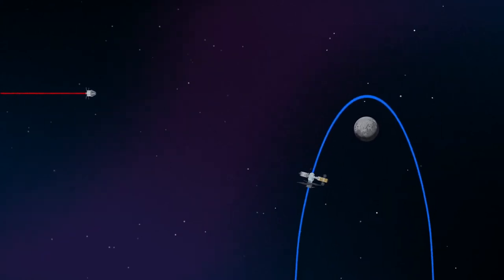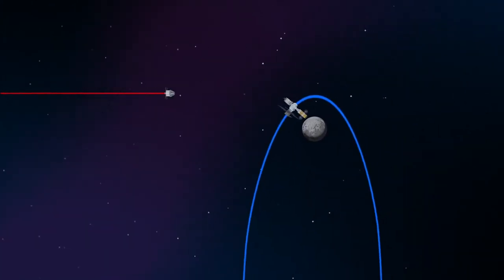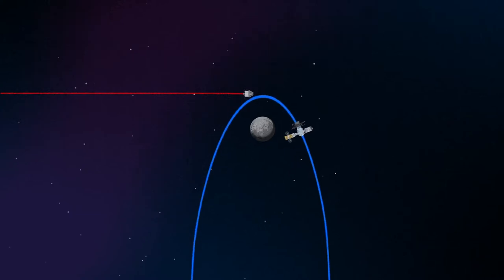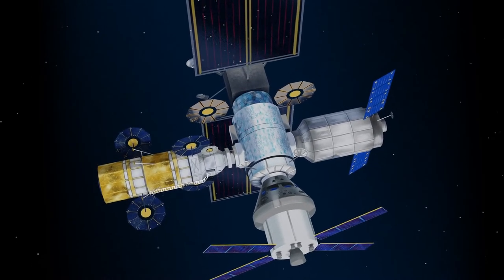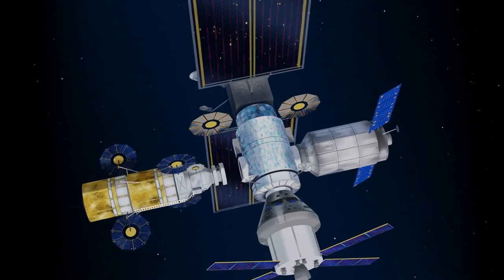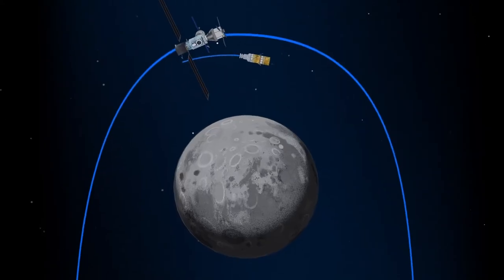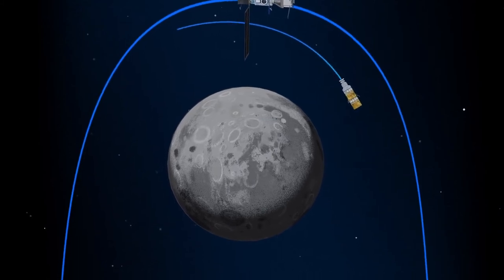Returning to our crew as they approach Gateway, the Orion must match the elliptical orbit of the station in order to successfully dock. Once on board, pre-selected crew members transfer to the lunar lander, while those assigned to Gateway remain on station.